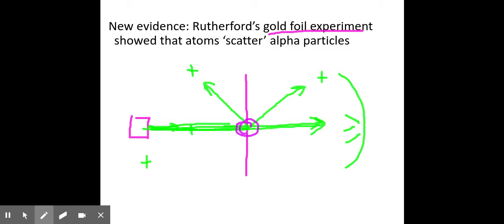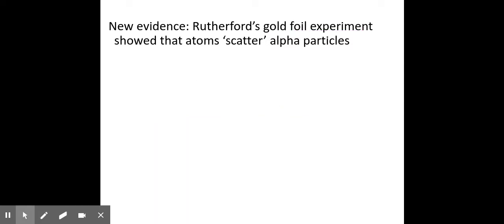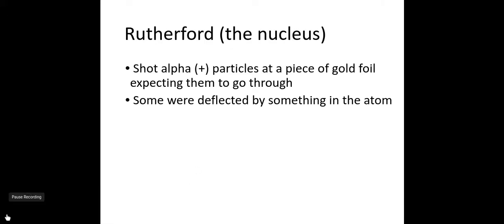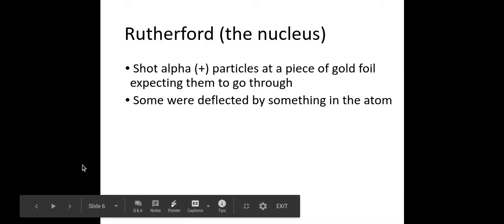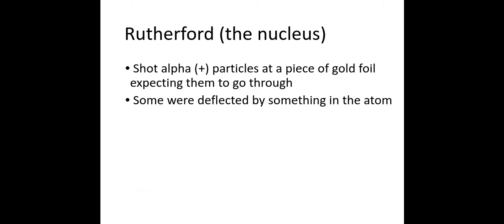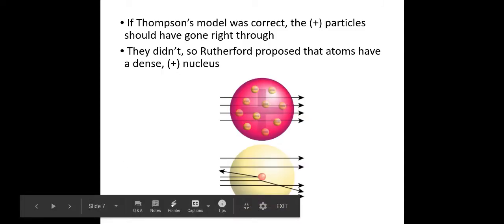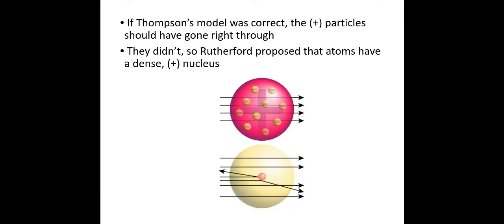But what was interesting was that not all of them went right through. Some got deflected off at an angle, and some bounced right back off the gold foil. So this is Rutherford's gold foil experiment probing what is actually going on inside an atom. According to Thomson's model, all of them should have gone through. They didn't, so there had to be something more going on.